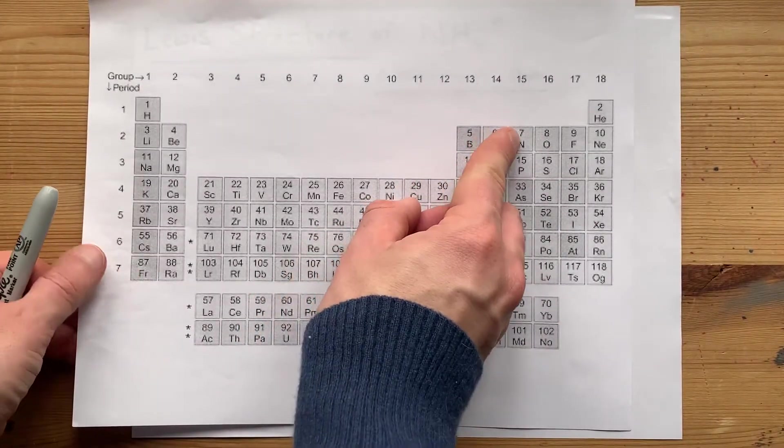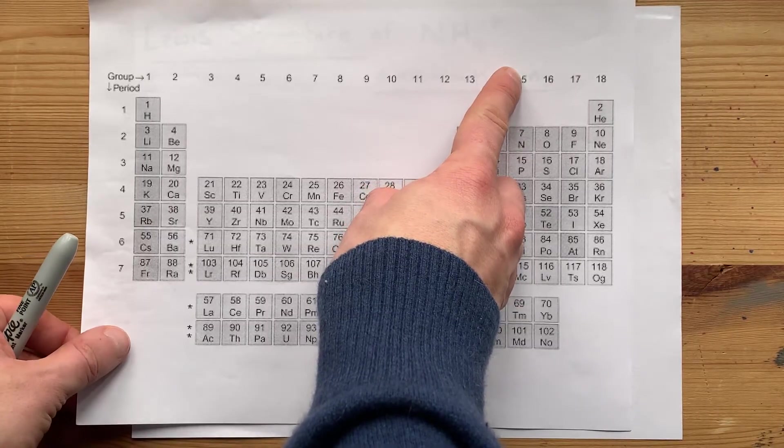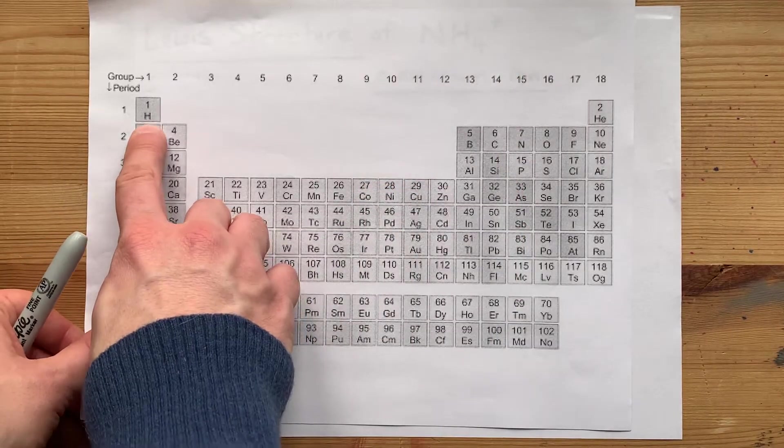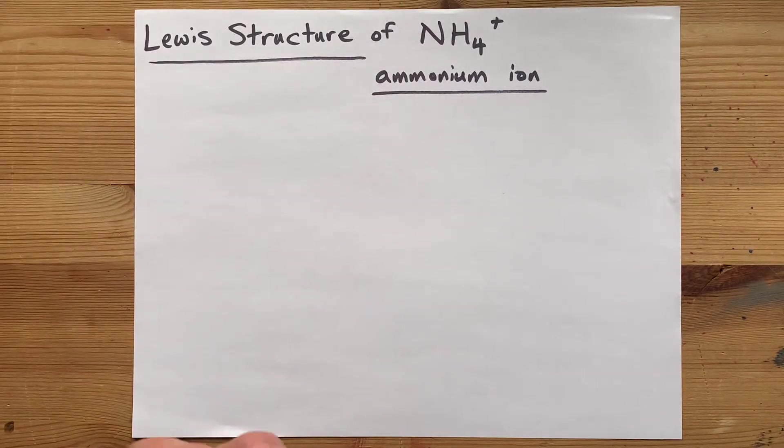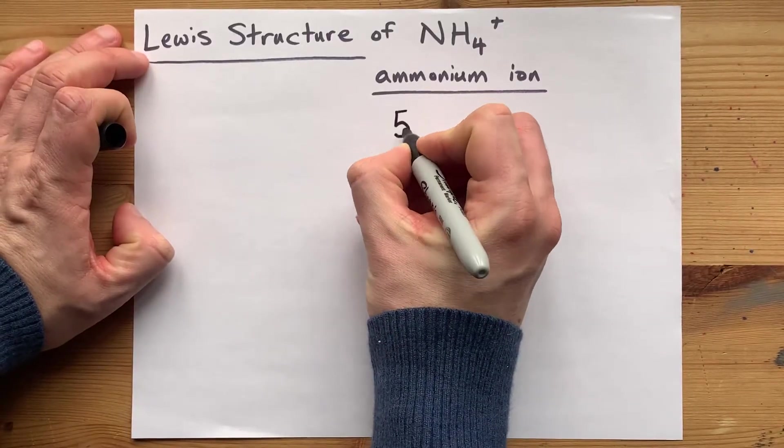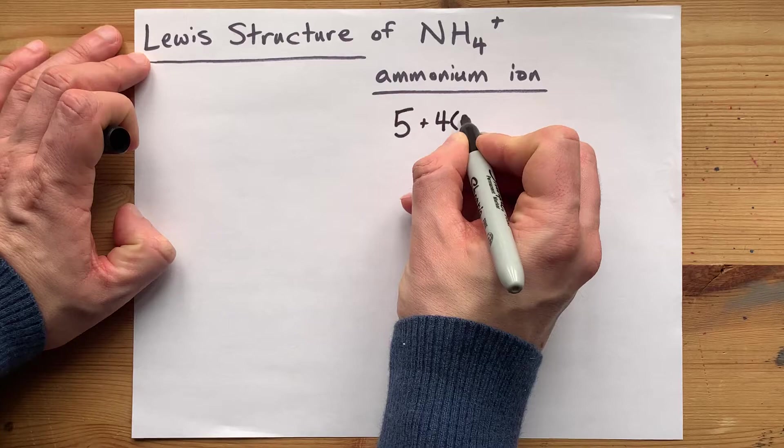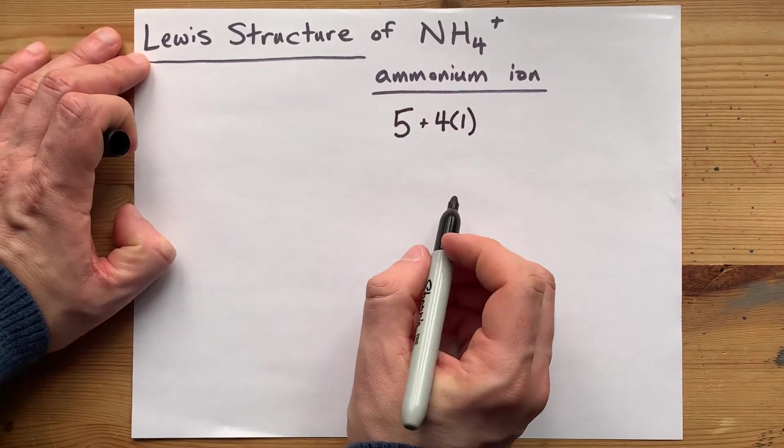What I mean is nitrogen brings five valence electrons, and hydrogen brings one valence electron each. I only have one nitrogen, so that's five electrons, but I do have four hydrogens, and each one brings one valence electron.